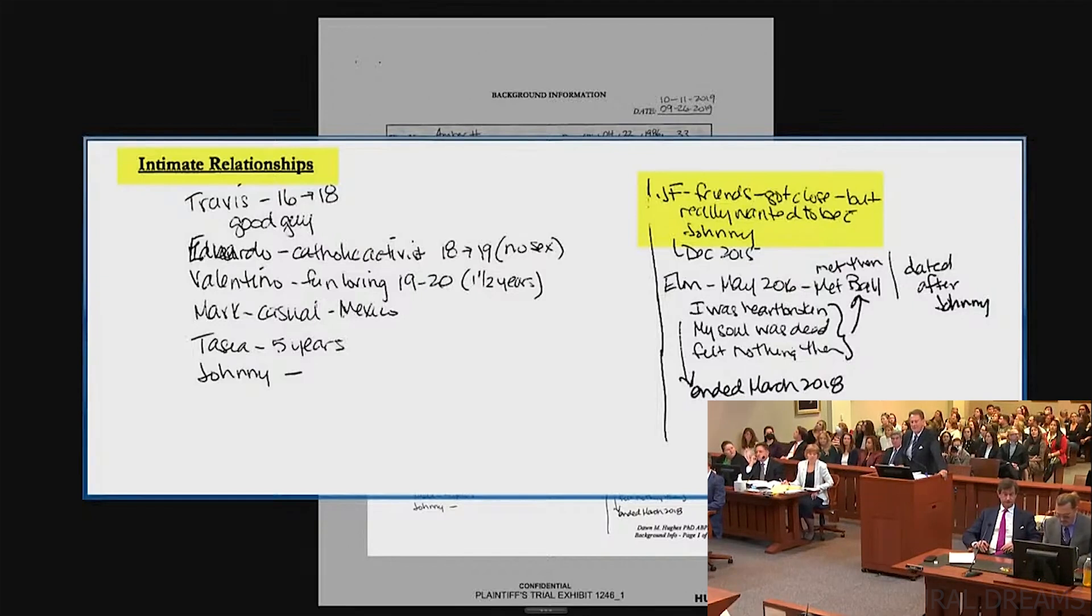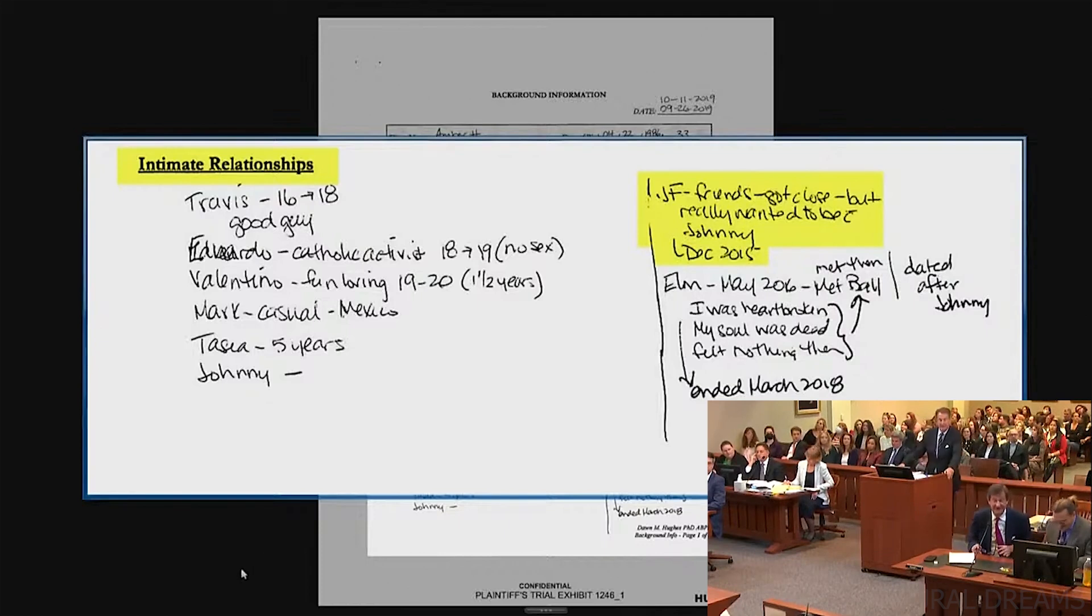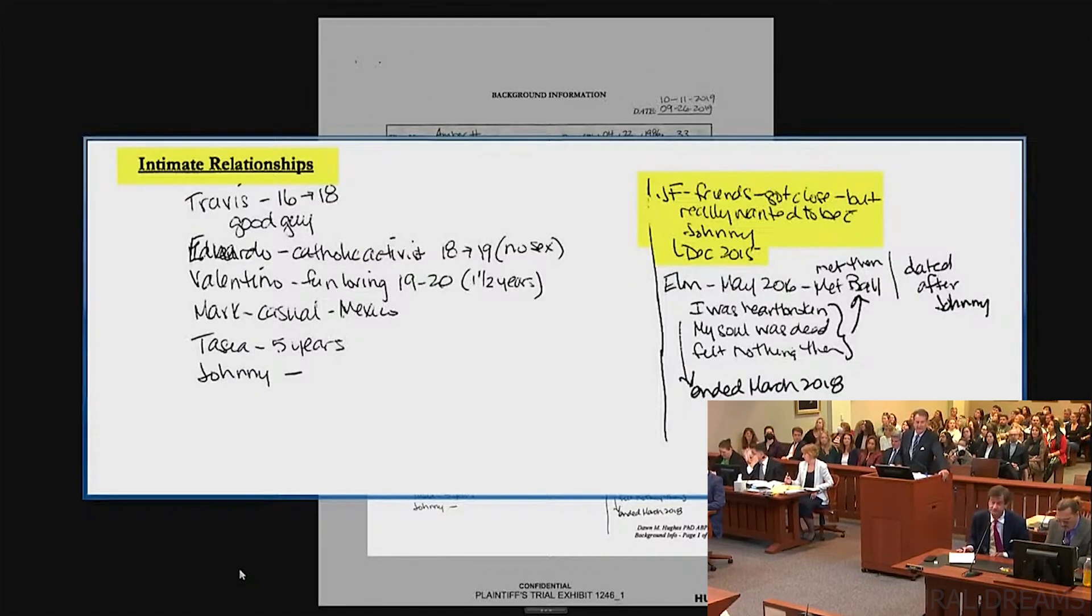And there's a note for December 2015. When they became more friends, more friendly. Right. And that was a period of time in which Ms. Hurd was married to Mr. Dunn, correct? Correct. So she became close with Mr. Franco in December 2015, and at least you put it under intimate relationships.